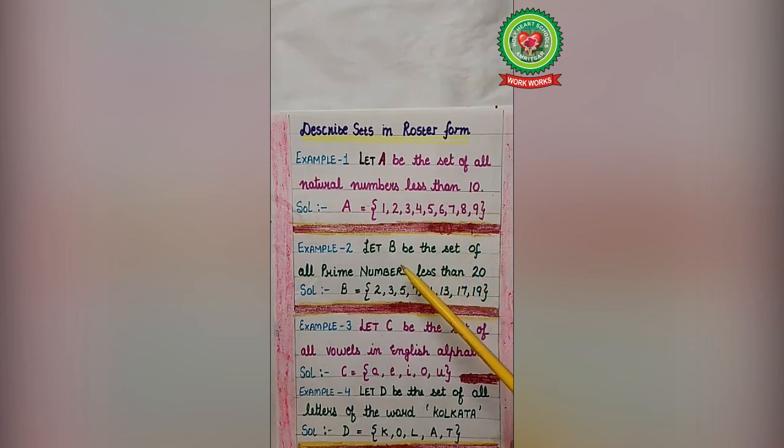Let's discuss another example. Let B be the set of all prime numbers less than 20. Prime number starts from 2. Name of the set is capital B. Start with the curly bracket: 2, 3, 5, 7, 11, 13, 17, 19. Next number is 23, that we will not write because we need numbers less than 20. So curly bracket close. This is a representation of set B in roster form.